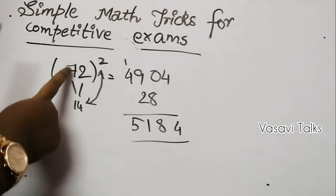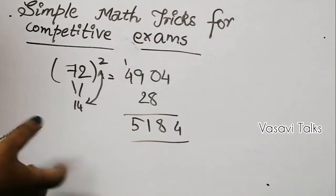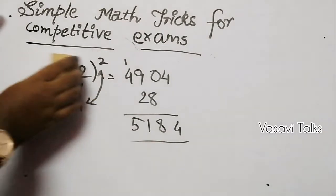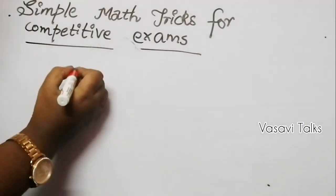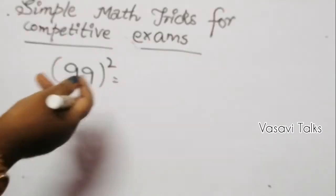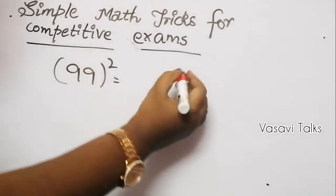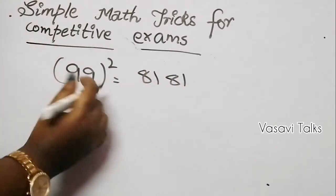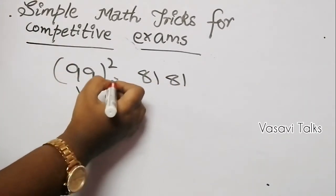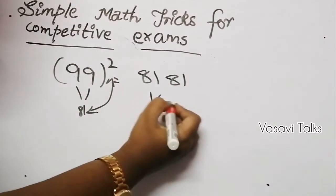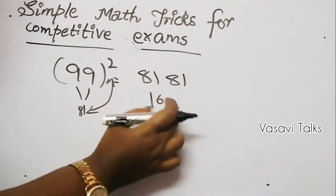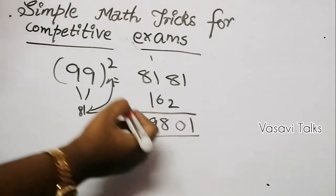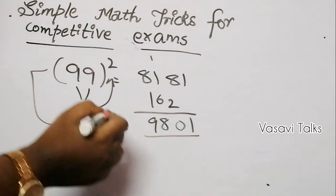Adding it all together, 72 squared is 5184. Let's try 99 squared. First, find 9 squared, which is 81. Then 9 squared again is 81. Now 81 into 2 is 162. Working through the digits: 1 carry, 8, 9 — the answer is 9801. So 99 squared is 9801.